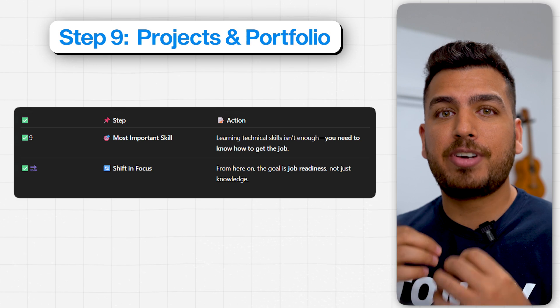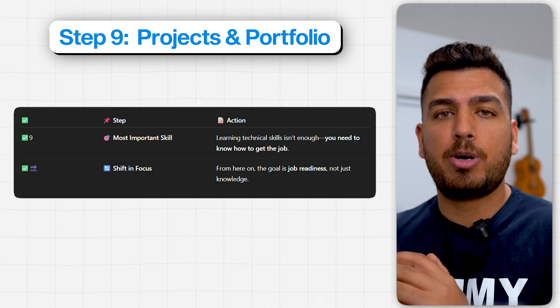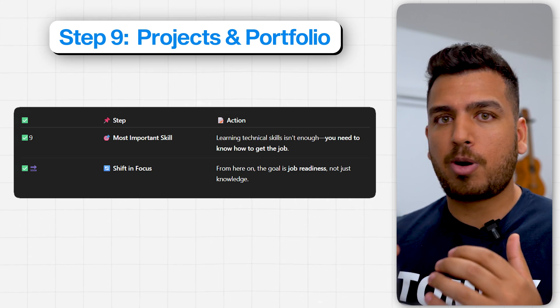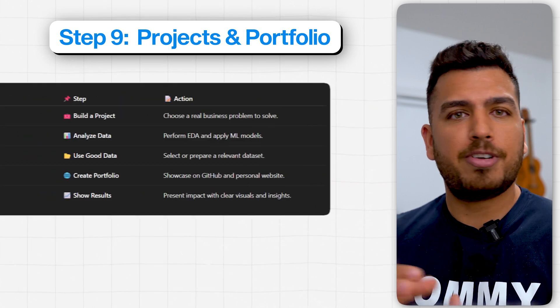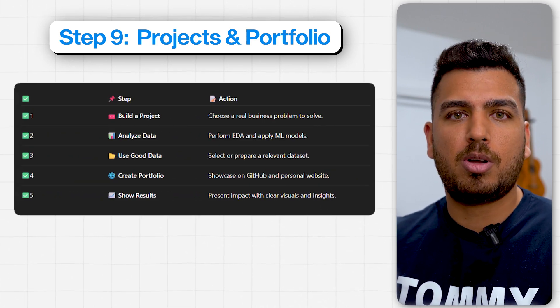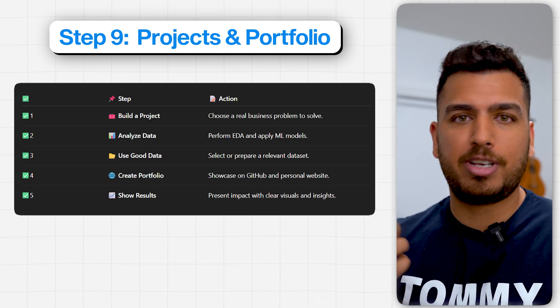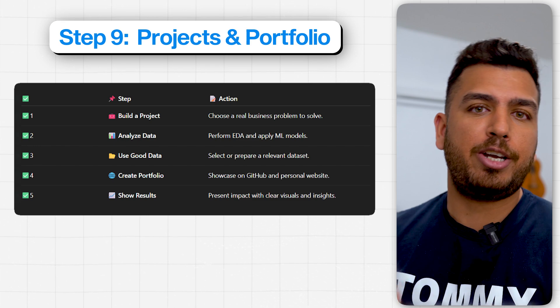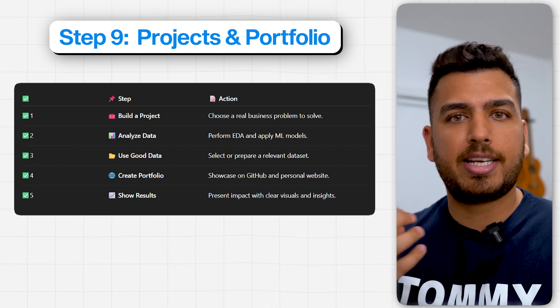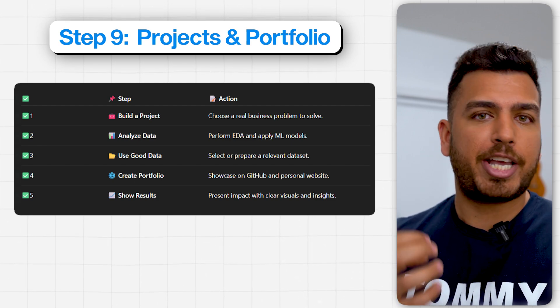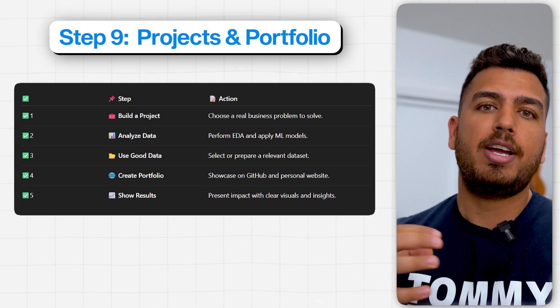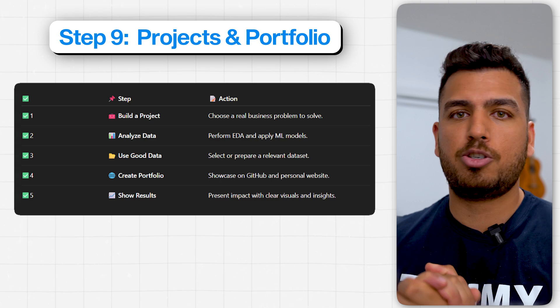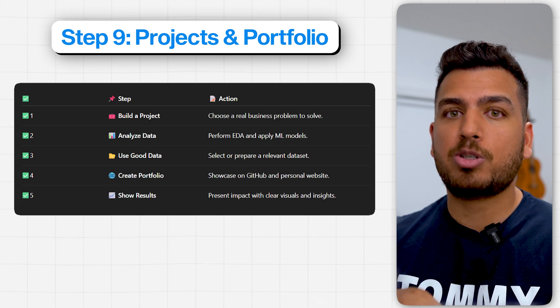Number nine is the most important skill — how do you get a job? The very first thing is to create projects and a portfolio. When it comes to projects, shortlist your datasets wisely, shortlist the business problems, and start creating end-to-end projects — where you define a problem, shortlist a dataset, prepare the data, do exploratory data analysis, find trends and patterns, and then do predictive analysis using machine learning models. I'll leave links in the description for good resources for your next dataset.